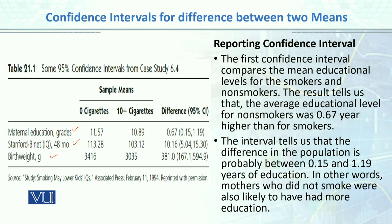For grades, the sample difference was 0.67, and when we calculate the standard error and construct the interval, it ranges from 0.15 to 1.19. This is how we report confidence intervals for any variable — giving the sample difference and then the 95% confidence interval for grades, IQ, and birth weight. This is the format used in journal papers, dissertations, and thesis work.